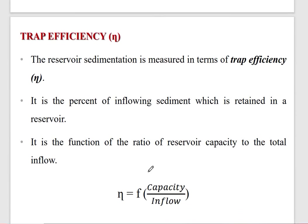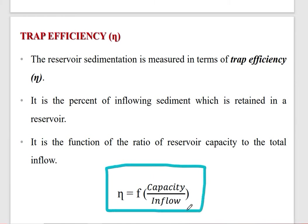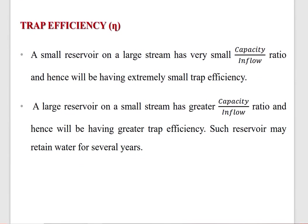Here is the trap efficiency. Reservoir sedimentation — we call this trap efficiency. Trap efficiency is a function of capacity divided by inflow — the capacity ratio. For small reservoirs, capacity is small. For large reservoirs, capacity is large. Capacity by inflow gives the trap efficiency.